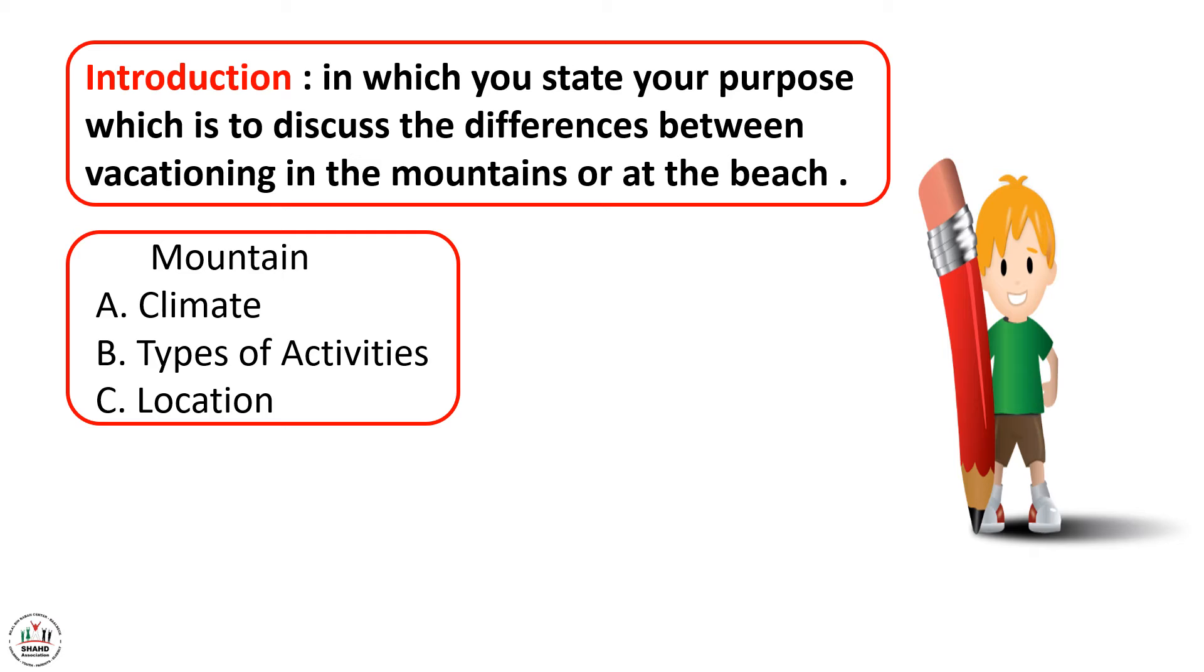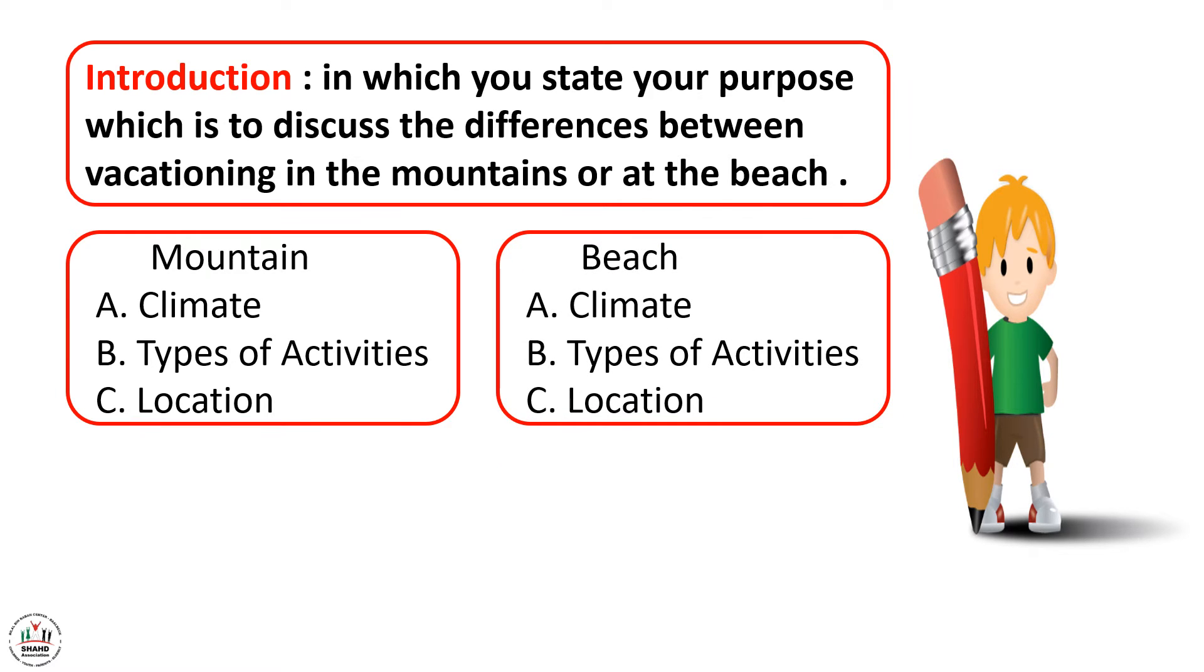At the body of your paragraph, you may start to talk with mountain, talk about the climate, types of activities, and the location. At the second body paragraph, you talk about the beach, the climate, types of activities, and the location.